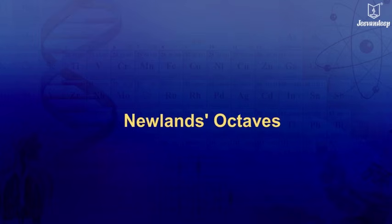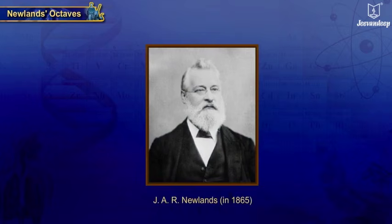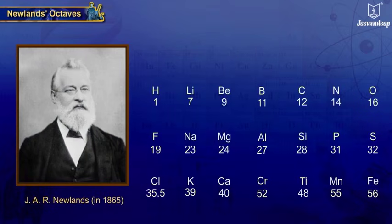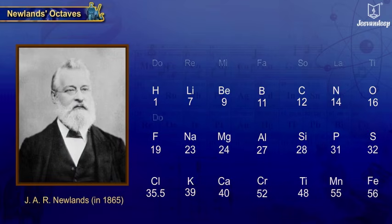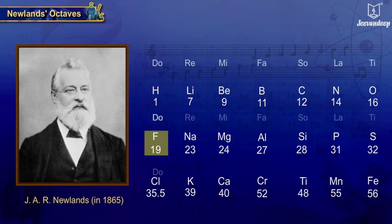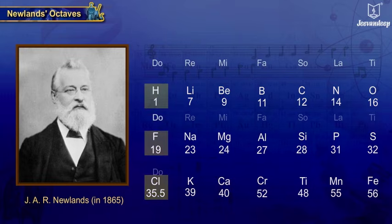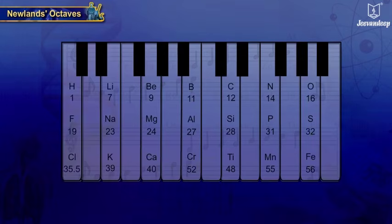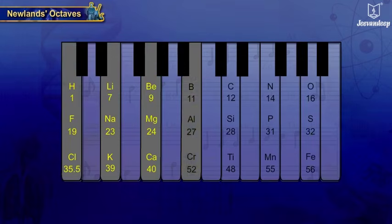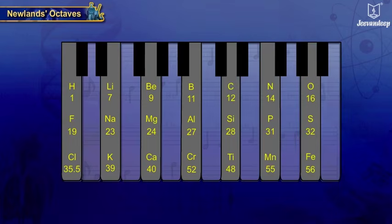Newlands, a British chemist, arranged all the known 56 elements in increasing order of their atomic masses and found that every 8th element had properties similar to that of the first, as in the case of the Octaves of Music. Hence, this classification was known as Newlands Octaves.